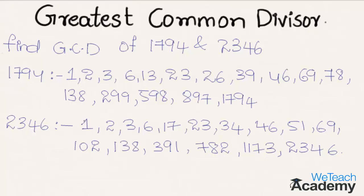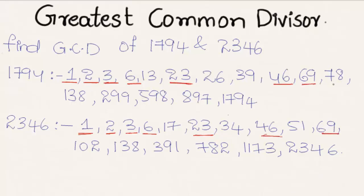Now let us mark the common factors of both numbers. The common factors are 1, 2, 3, 6, 23, 46, 69, and 138. Note that 13 is not a common factor, and 78 is not a common factor either. There are no more common factors after 138.